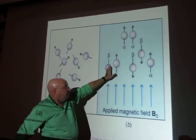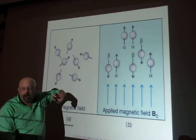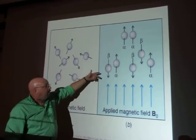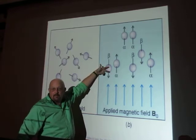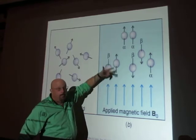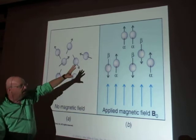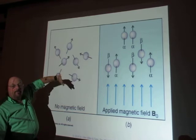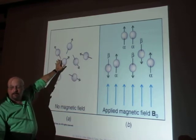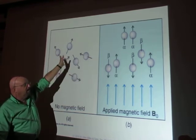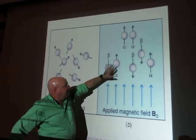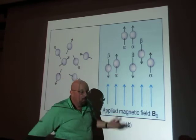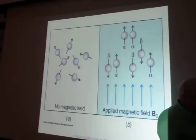These two spin states are not the same energy. It's higher in energy to oppose the magnetic field and lower in energy to line up with the magnetic field. In the absence of a magnetic field, it doesn't matter which way the spins point — they're all the same energy. But when we get into a magnetic field, those spin states are at different energies depending on whether you're with the magnetic field or against it.